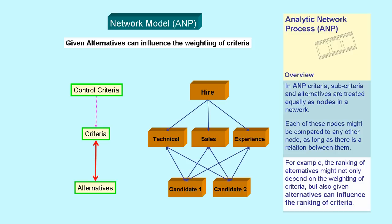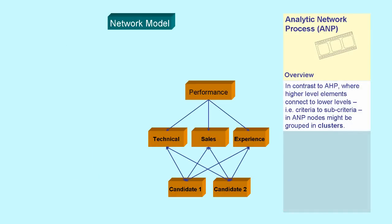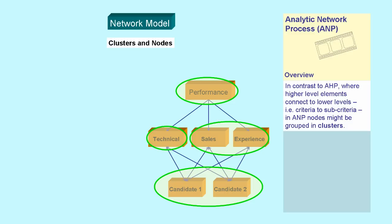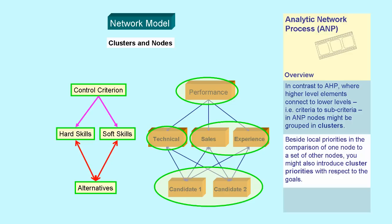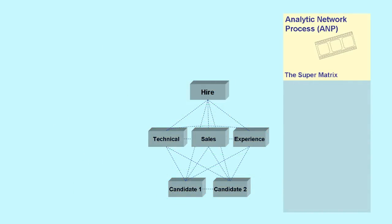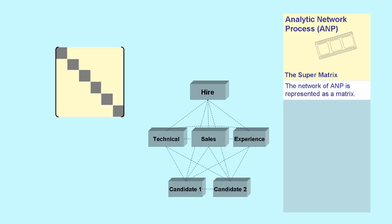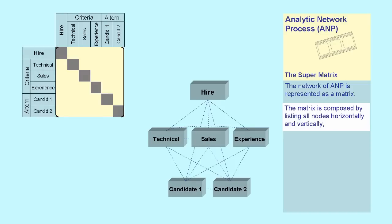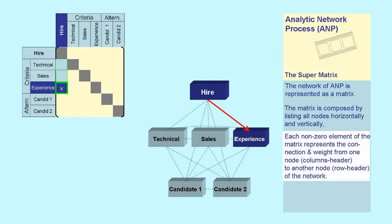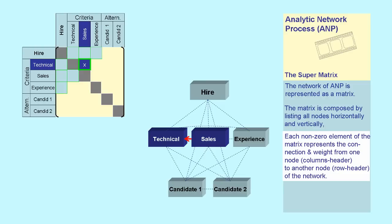In contrast to AHP, where higher level elements connect to lower levels, in ANP nodes are grouped in clusters. For example, you might group the recruitment criteria in the clusters HardSkills and SoftSkills. Beside local priorities in the comparison of one node to a set of other nodes, you might also introduce cluster priorities with respect to the goal. The network of ANP is represented as a matrix, composed by listing all nodes horizontally and vertically, so that each non-zero element represents the connection and weight from one node to another node of the network.